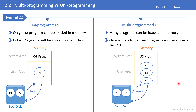One important point: uniprogramming and multiprogramming is not about the CPU — it is all about memory, your RAM. It refers to how many processes the OS can load in memory. Depending on that, we call the OS uniprogrammed or multiprogrammed.